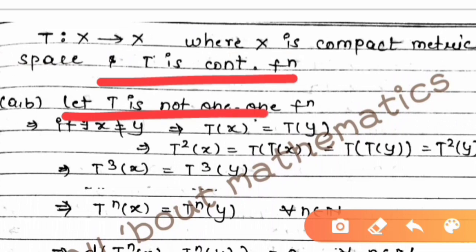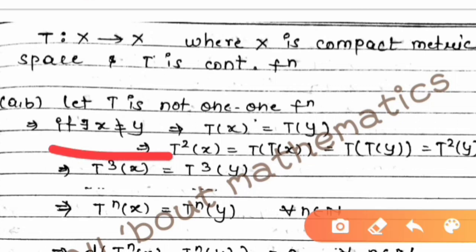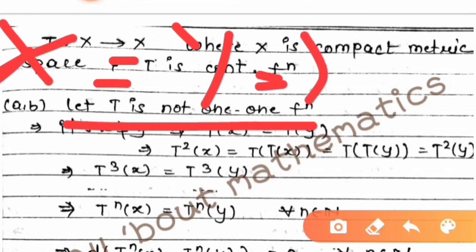Let us assume T is not one-one. If T were one-one, then x equals y would imply T(x) equals T(y). Since T is not one-one, there exist x, y such that x does not equal y but T(x) equals T(y). Now, if p implies q, then not-p implies not-q.